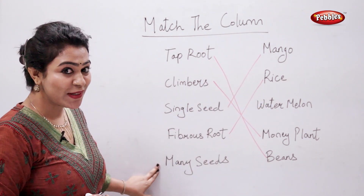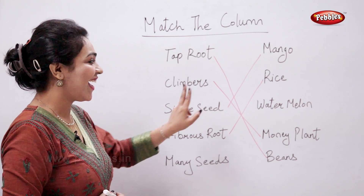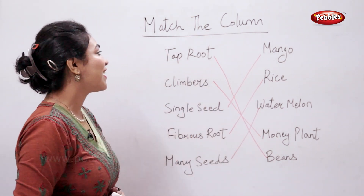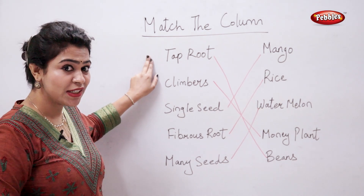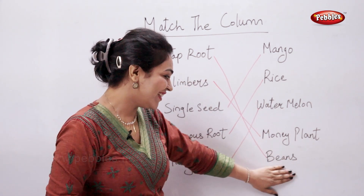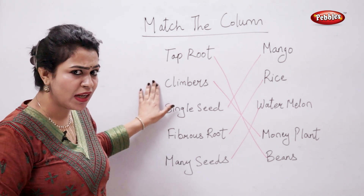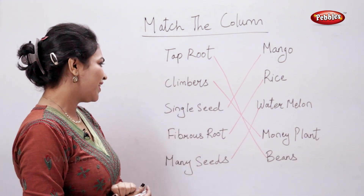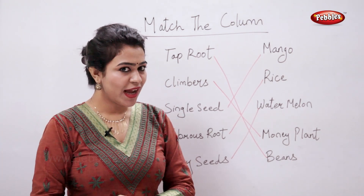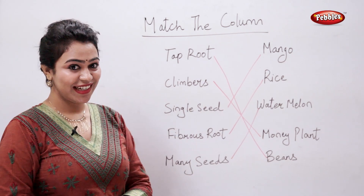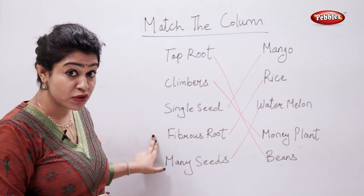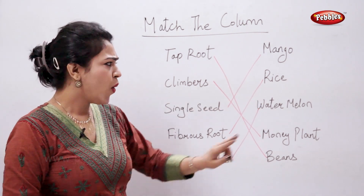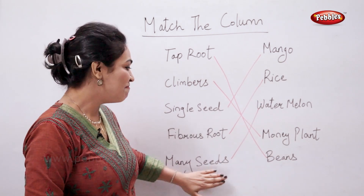Which fruit has many seeds? That's a watermelon. An example for a taproot is beans. Example of a climber is money plant. Mango has a single seed. Example of a fibrous root is rice. And watermelon has many seeds. It's good.